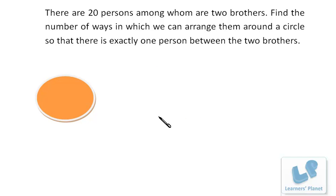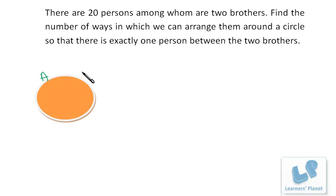Now a more challenging problem — arrangement around a circle with two extra conditions. There are 20 persons among whom two are brothers. Find the number of ways to arrange them around a circle so that there is exactly one person between the two brothers. Let the brothers be A and B. We need one person sitting between A and B, chosen from the remaining 18 persons.